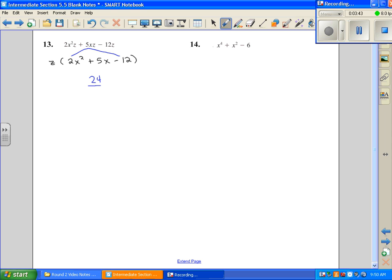What multiplies to give me 24, but subtracts to give me 5. 1 times 24 is not going to give me a 5. 2 times 12 is not going to work. What about 3 times 8? Now, 3 times 8 can get me a 5, but that means negative 3 and 8.